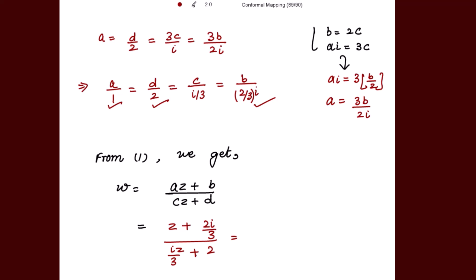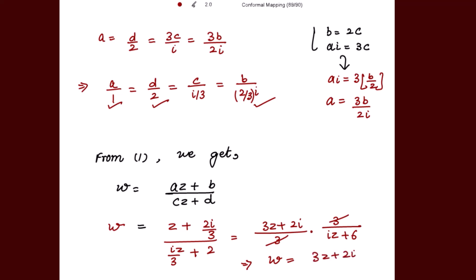Taking the LCM and simplifying, the 3s cancel and we get the final answer: w = (3z + 2i) / (iz + 6). This is the same result obtained in the previous content. Thank you. God bless you all.